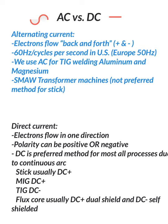It's more of a 50 Hertz in Europe. We use AC for TIG welding aluminum and magnesium, and it can be used for TIG brazing, but these are the two big ones: aluminum and magnesium.